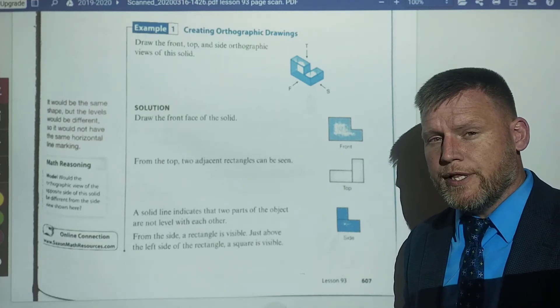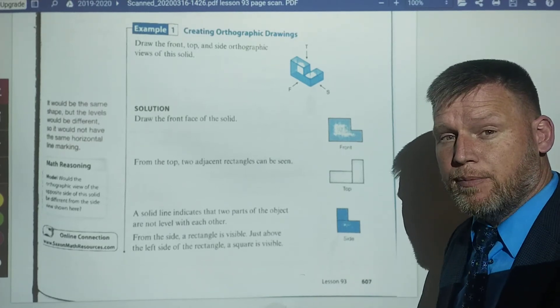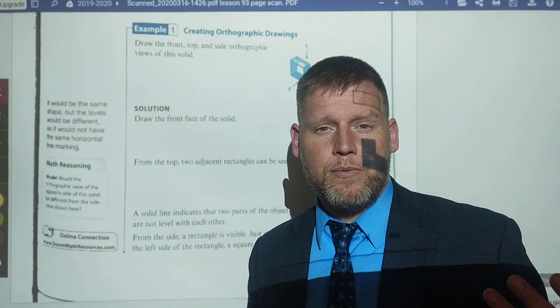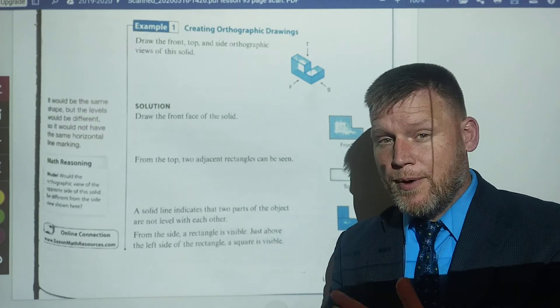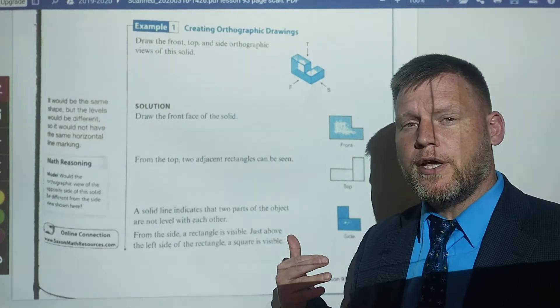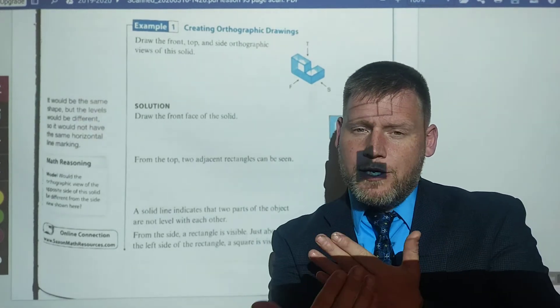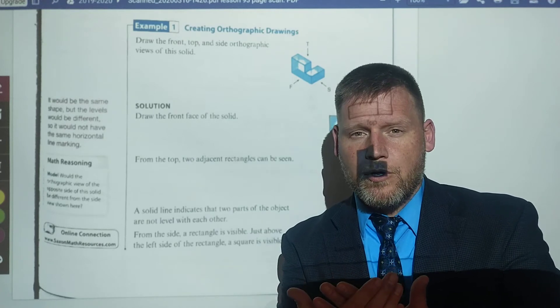And when we're doing this, they're going to ask you in these examples to match up what they possibly would look like. This is very similar to a net, which was unfolding the box. This is just looking at the different angles from a straight-on view on how it would look.